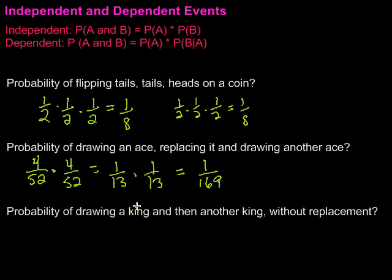But there's going to be one less king available, because one's already out, and there's also one less card that we're working with. So, the probability of drawing a king the first time would be 4, because there's 4 kings, out of 52.